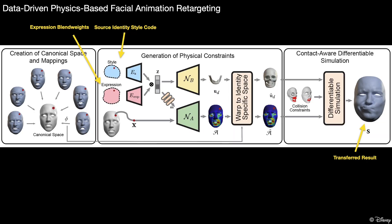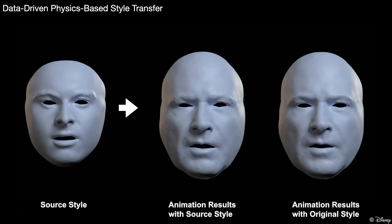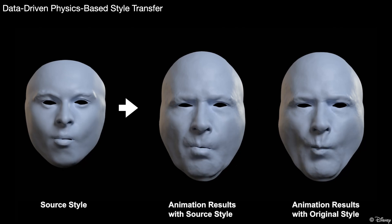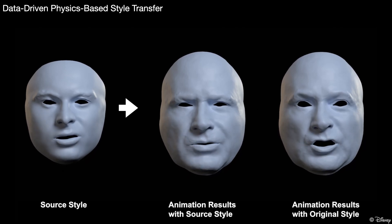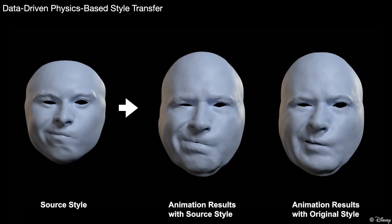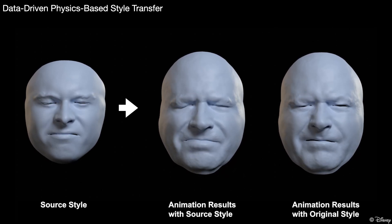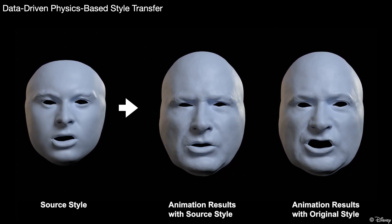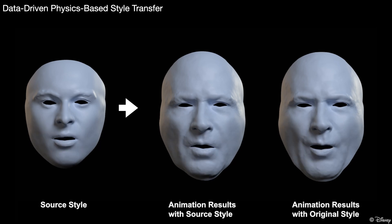Our framework can support style transfer, as we can use the source identity style code to animate a character. Here is the result of style transfer. On the right, we show the animation results with the identity's original style. It can be seen that the source style is naturally injected into the target.